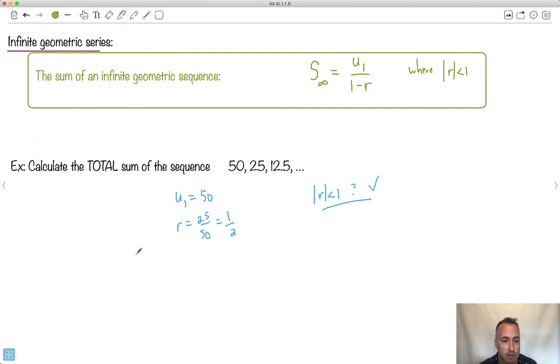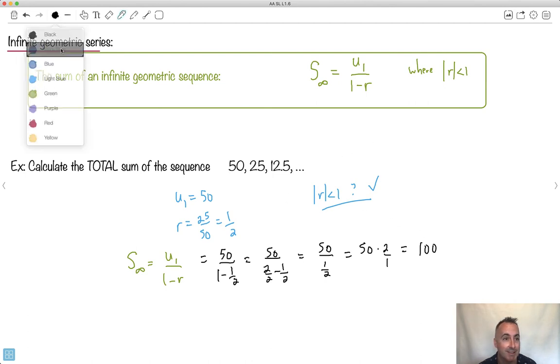If I'm doing this on a test, I would show that I know how to do this. The sum to infinity is u1 over 1 minus r. I'm going to show the substitution. So u1 is 50 and r is 1 half. I need to make a common denominator. So I'll make this 2 over 2 minus 1 half. Now I can say 2 minus 1 is 1 half. So I have 50 over 1 half. If you divide by a fraction, you multiply by the reciprocal. So it's the same as 50 times 2 over 1, which is 100. We found out what happens if I add these terms to infinity. It's actually kind of cool that you can do this.